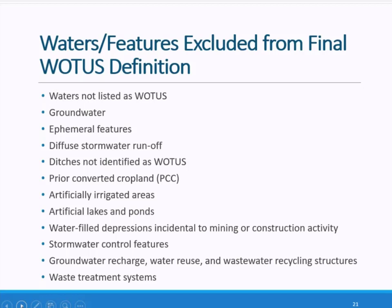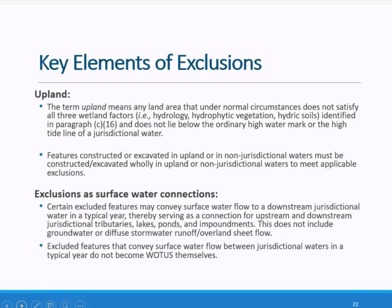Before walking through each exclusion, there are a few key points that apply to many of them. Many of the exclusions refer to uplands, which the agencies have defined in the final rule. The agencies are clarifying that where a feature is constructed or excavated in a non-jurisdictional water, as opposed to uplands, it is excluded. Where an exclusion is for a feature constructed or excavated in uplands or in non-jurisdictional waters, the feature must be created wholly in uplands or in non-jurisdictional waters. Features partially constructed in uplands or non-jurisdictional waters could potentially meet the definition of WOTUS. However, the mere interface between the excluded feature and WOTUS would not make that feature jurisdictional.